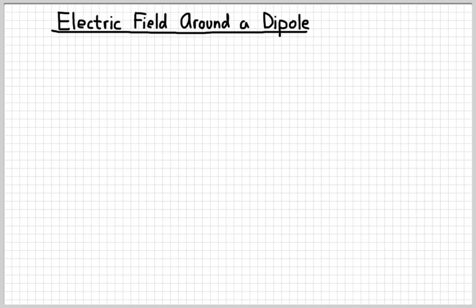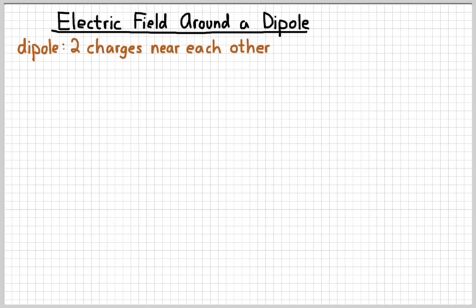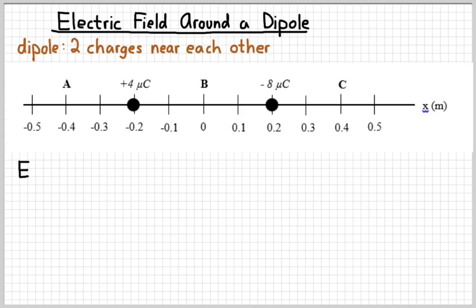Let's look at another example using a dipole — simply two charges near each other, both creating an electric field in the space around them. Where you are relative to those two charges determines what the electric field does. We have one charge of plus 4 microcoulombs and another of negative 8 microcoulombs, and we want to know the electric field at point A.